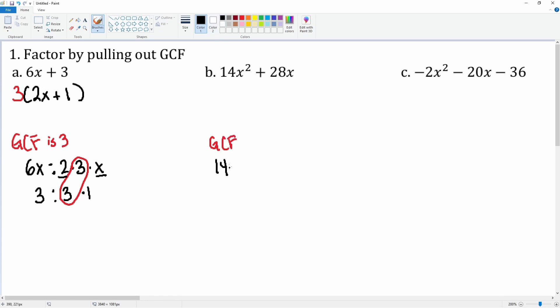Next, part b. Let's find the GCF for 14x² + 28x. We write down each term and expand: 14x² is 7 times 2 times x times x, and 28x is 7 times 4 times x.